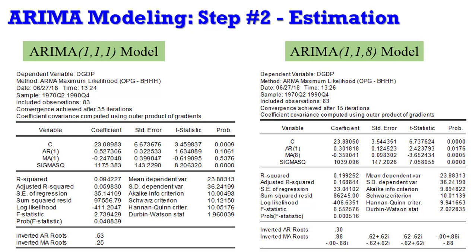Choose the model with the lowest Akaike Information Criterion (AIC) and SIC, and the highest adjusted R-squared. The sigma-squared represents the volatility of the variable, and you must choose the model showing the least volatility. This makes sense — ARIMA is principally used for forecasting economic series like stock prices, and choosing the least volatile model makes the predictive power more efficient.